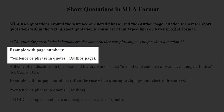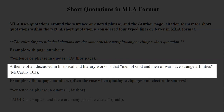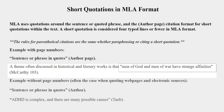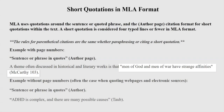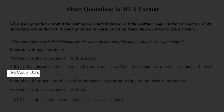Now let's take a look at some examples. Example with page numbers — author-page format. Our first example is a quotation from a book that has both the author and page number available. Here is the format: sentence or phrase in quotes, followed by the author-page citation format. And here is our example: "A theme often discussed in historical and literary works is that men of God and men of war have strange affinities." In this example, the quote is a phrase within the sentence, so we put our quotation marks where it starts with the word 'men' and where the quote ends with 'affinities.' Then our in-text citation, which is parentheses, author's last name, page number, close parentheses, and the period — (McCarthy 103).